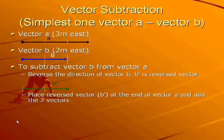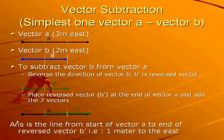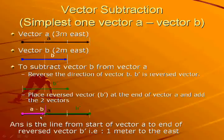Next, we place the reversed vector B-stroke at the end of vector A and add the two vectors. Here is vector A, and here is the reversed vector B-stroke being placed at the end of vector A. The answer is the line from the start of vector A to the end of the reversed vector B-stroke, given by this pink arrow, which is a vector of 1 meter to the east.